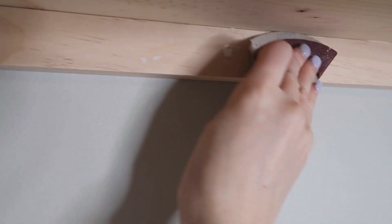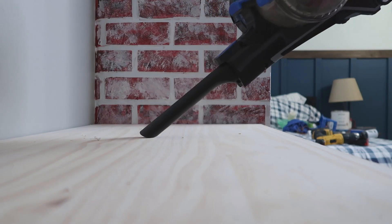I also went through and spackled all of the nail holes and the big screw holes that were in the back of those brace pieces. Once it was dry, I went through and sanded it all and cleaned up the mess before I went on to painting.